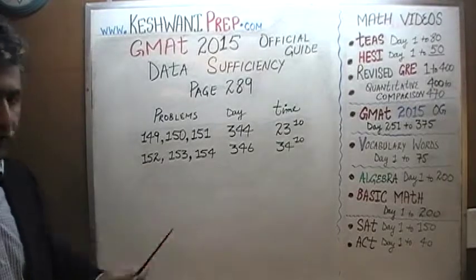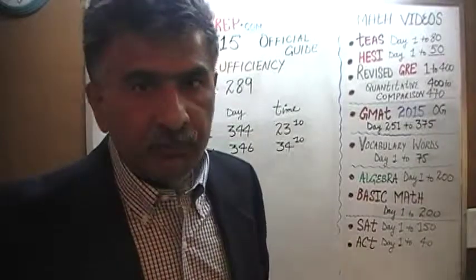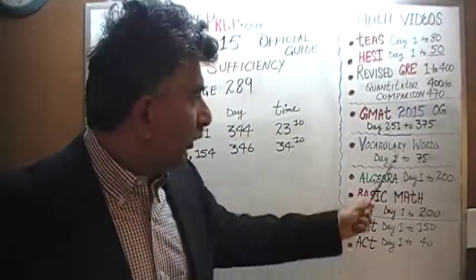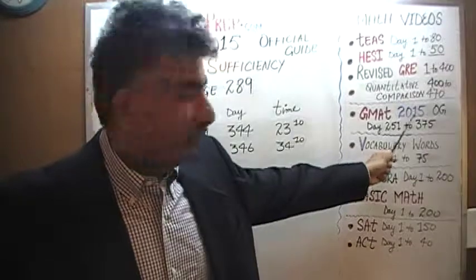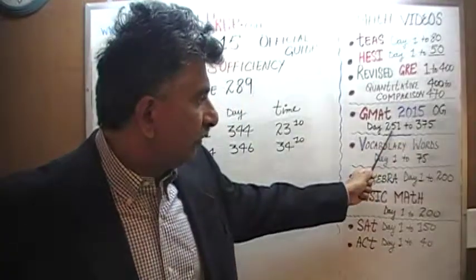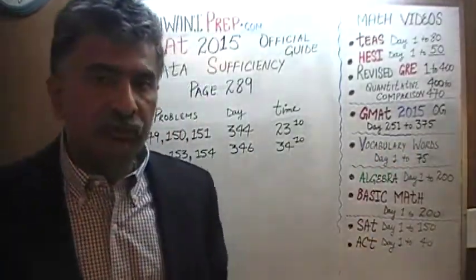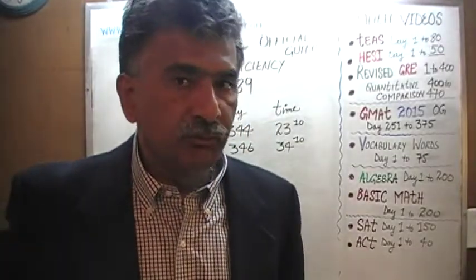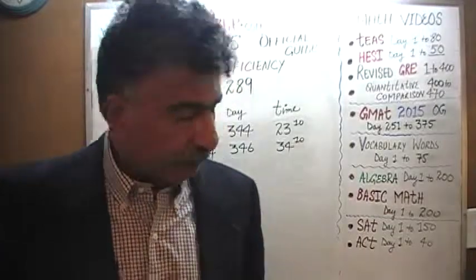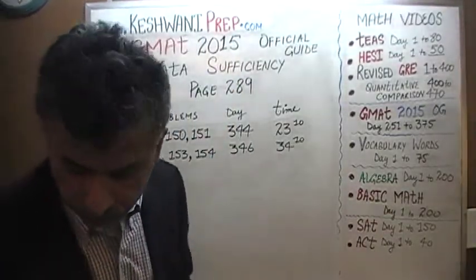You will find the solutions to all the math problems appearing in the 2015 Official Guide from day number 251 through 375. The solutions to data sufficiency problems are even numbers, and solutions to problem solving questions are odd numbers — 344, 346. Bye now.